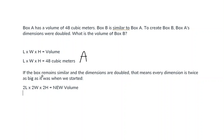If box B remains similar and the dimensions are doubled, then every dimension is going to be twice as big as it was when it started. So the length is now twice the length, the width is now twice the width, and the height is now twice the height.